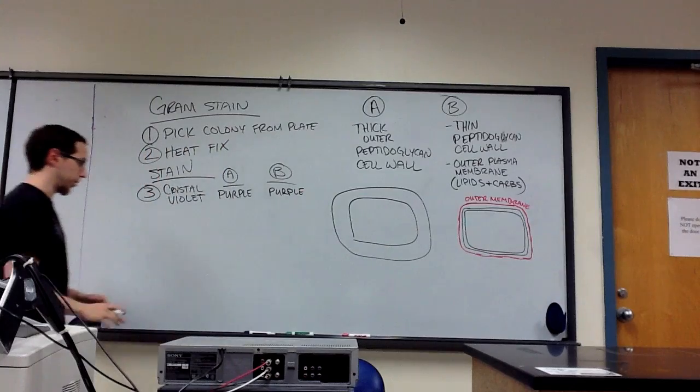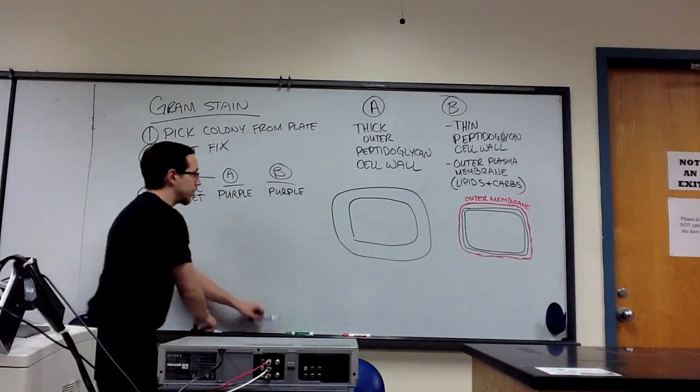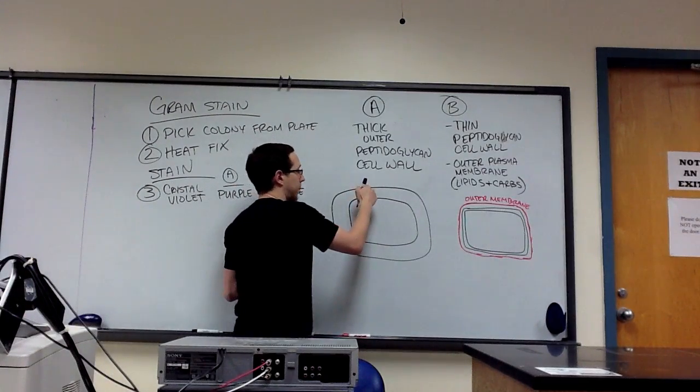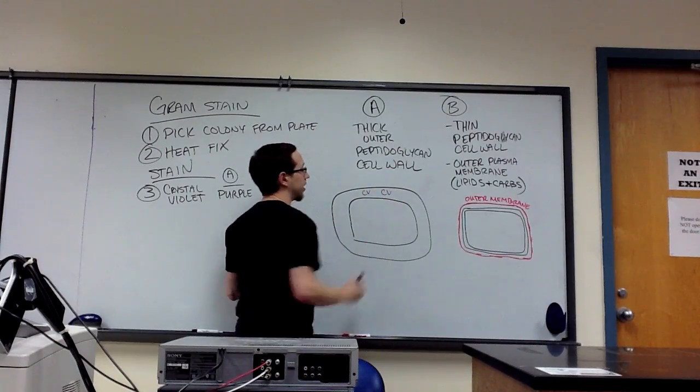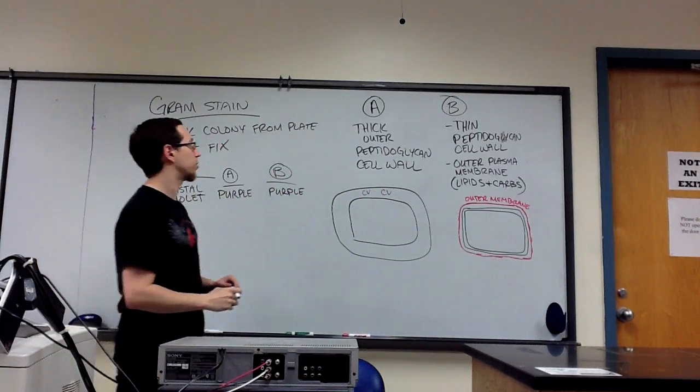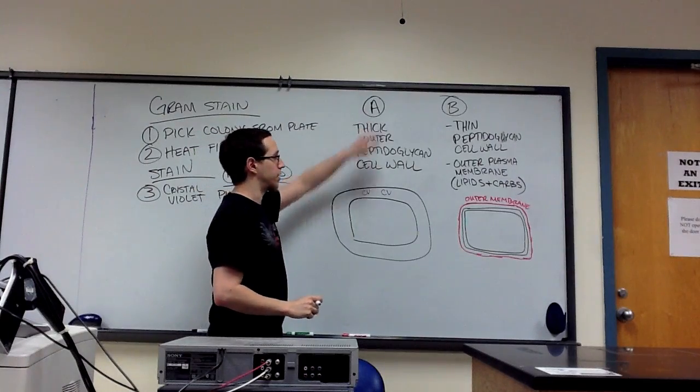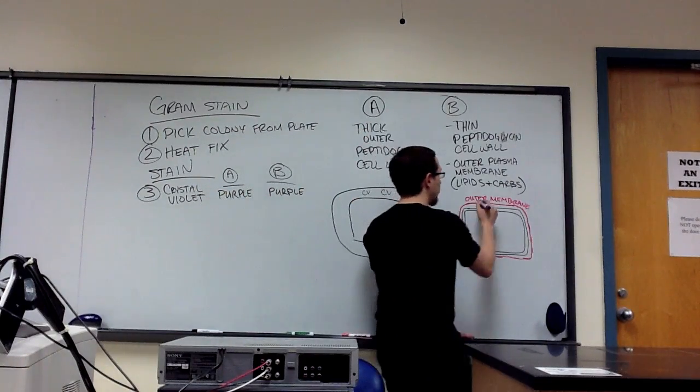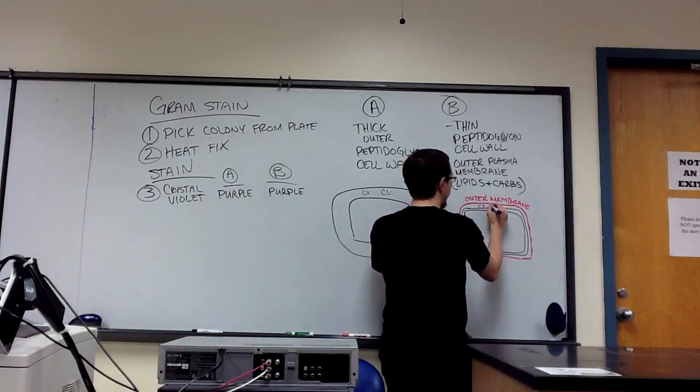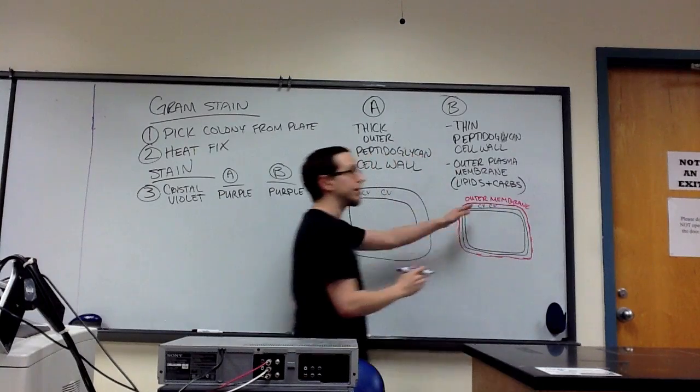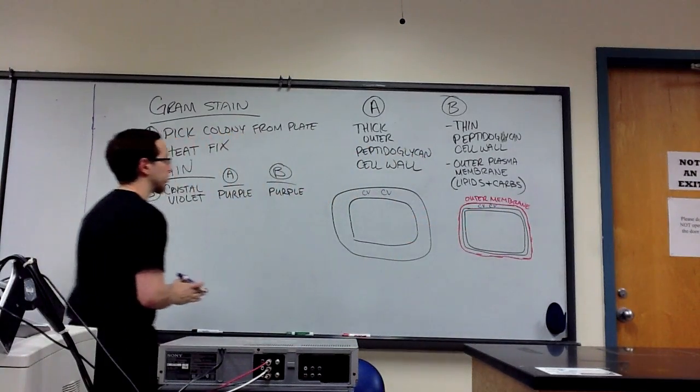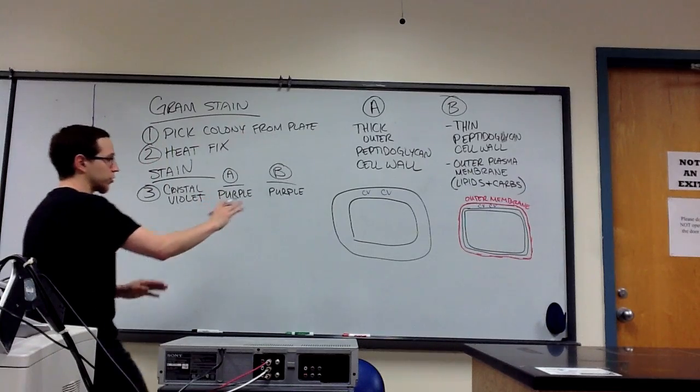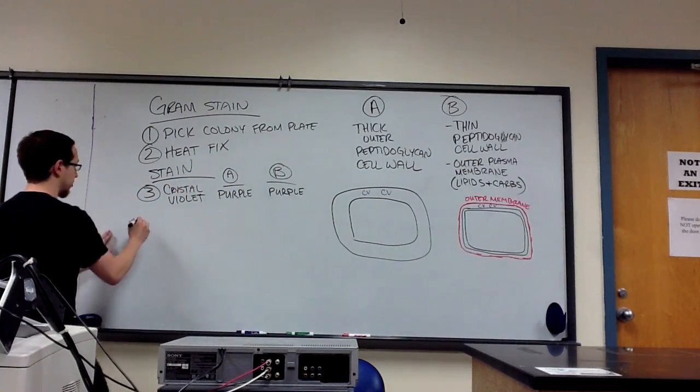Now here's the difference. The crystal violet permeates pores in this thick peptidoglycan cell wall. So it currently is inside those pores in the thick peptidoglycan cell wall in our A-type cell. It permeates the outer membrane in our second cell, cell B, and exists between that outer membrane and the thin peptidoglycan cell wall. So that's where crystal violet is in either case. So both cells are purple.